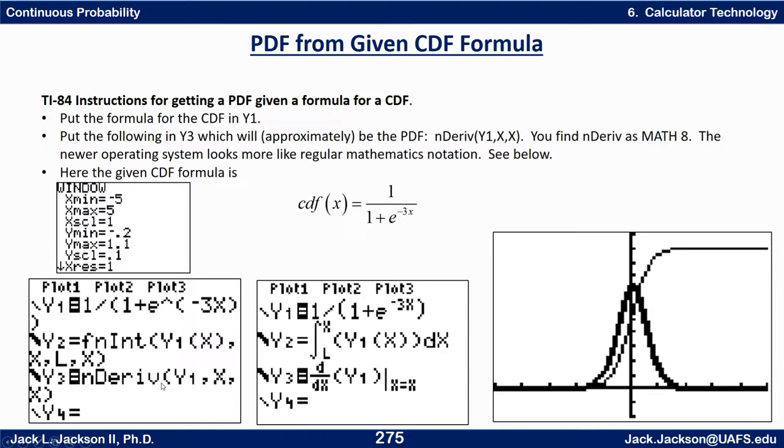If you got the older operating system it'll look like this: nDeriv of Y1, comma X, comma X, close parentheses. Y3 will be the PDF if Y1 is the CDF.